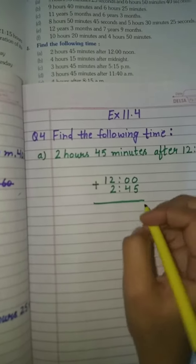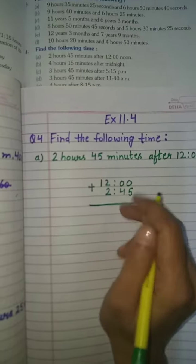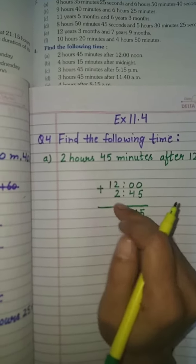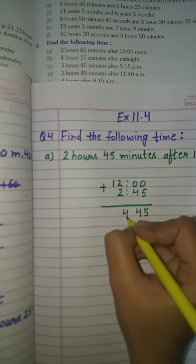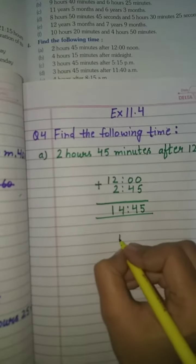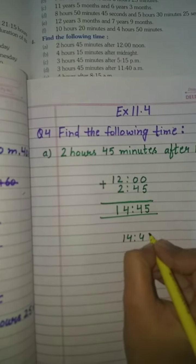0 plus 5 equals 5. 0 plus 4 equals 4. 2 plus 2 equals 4. 1. So it's 14 hours 45 minutes.